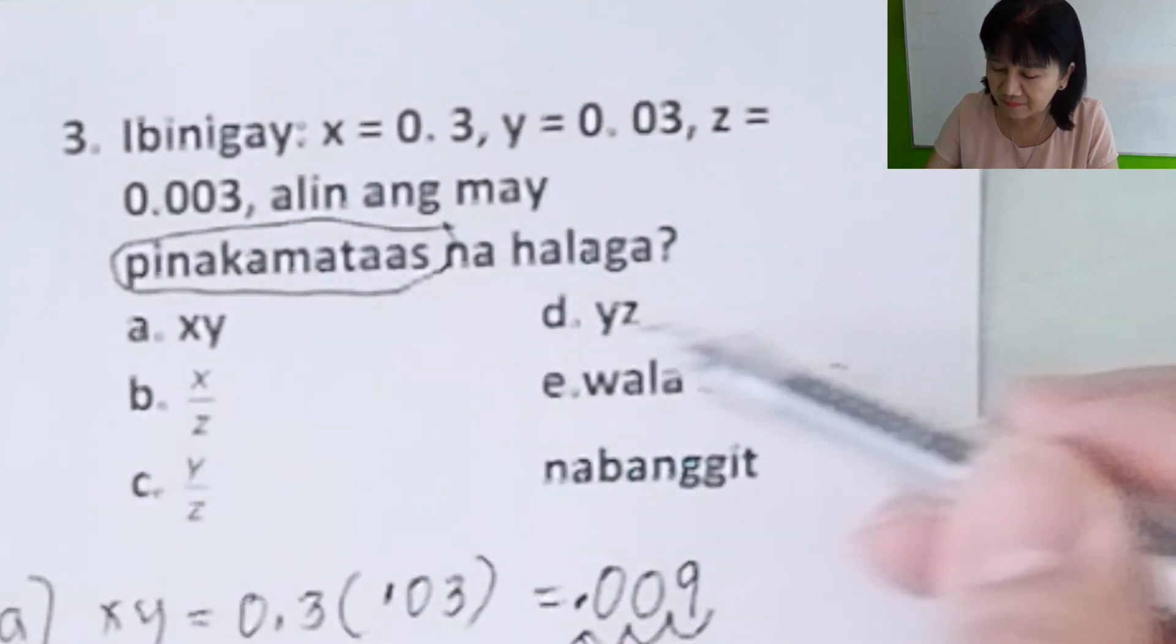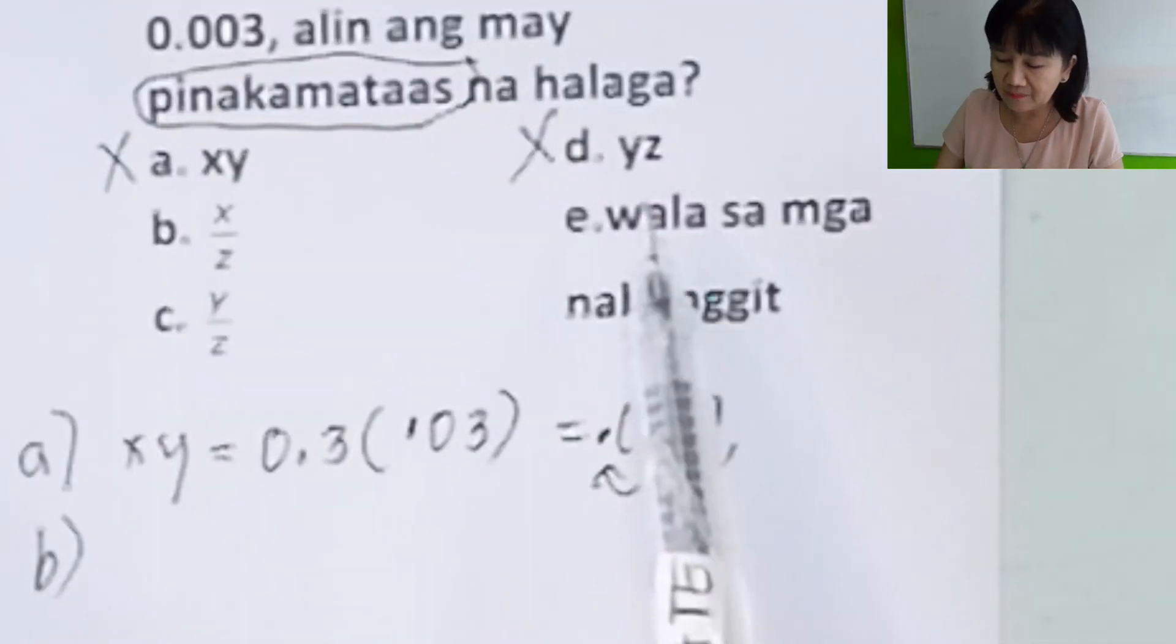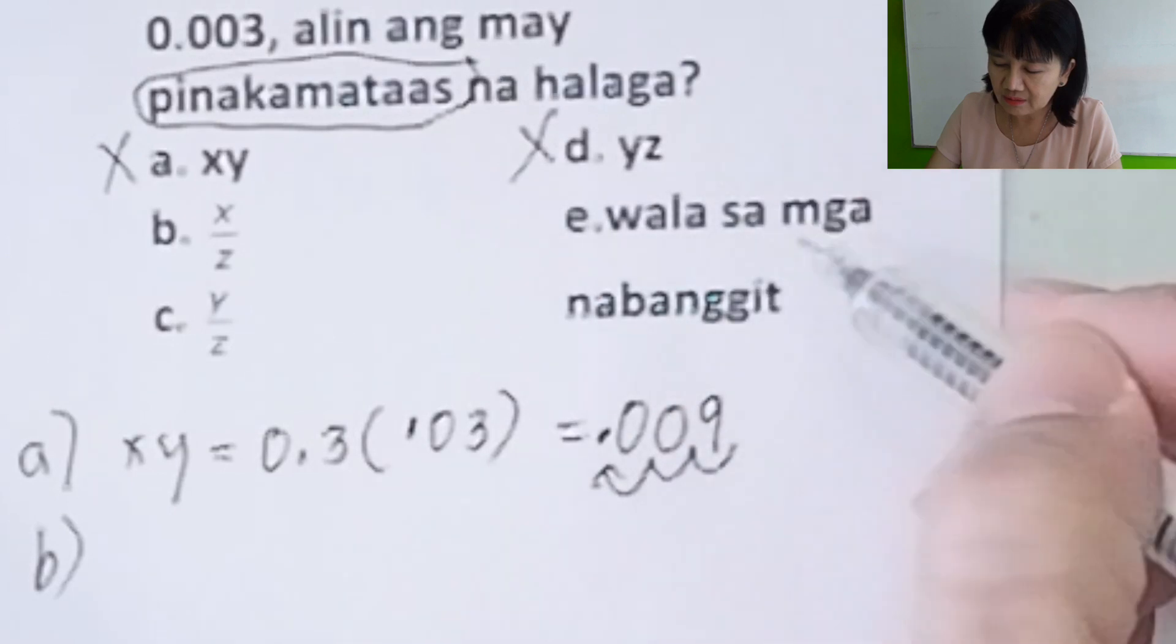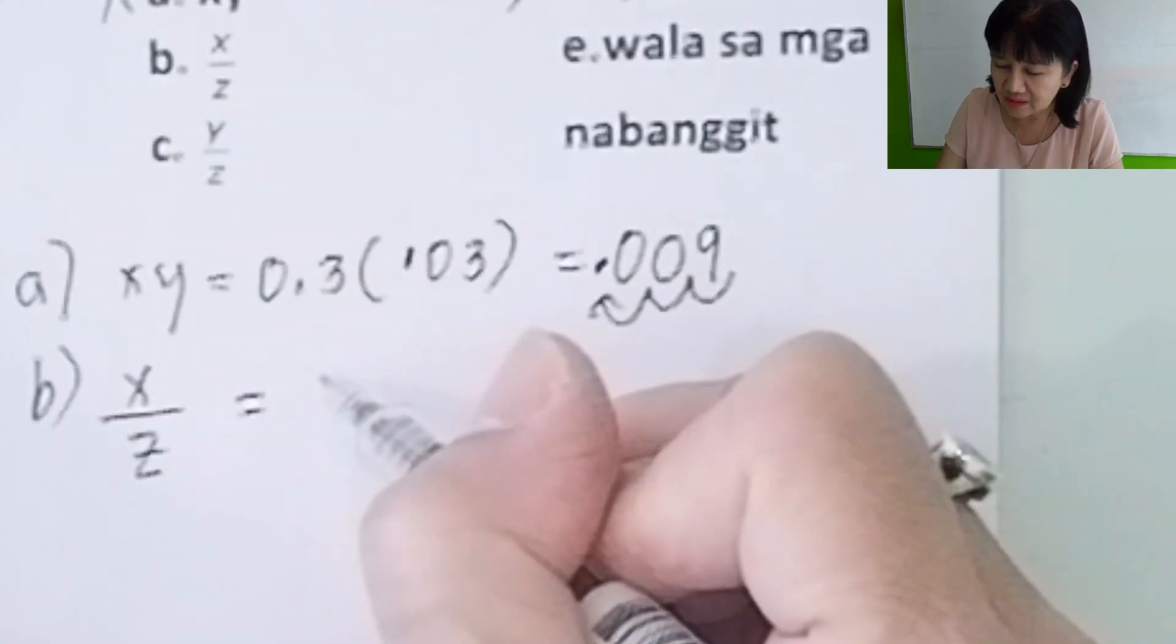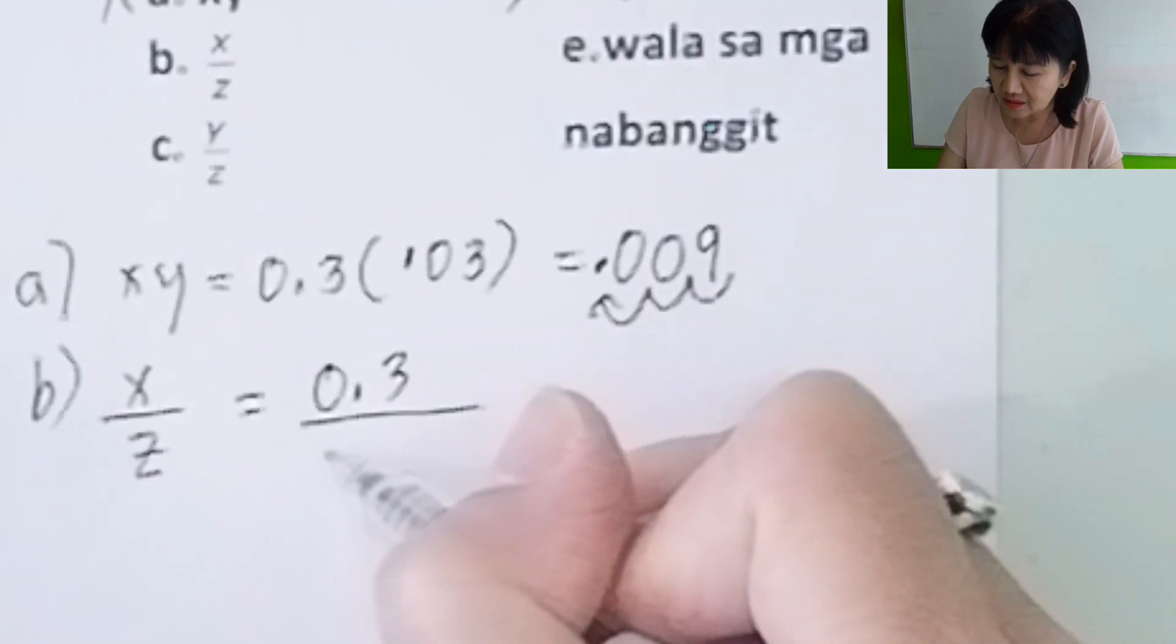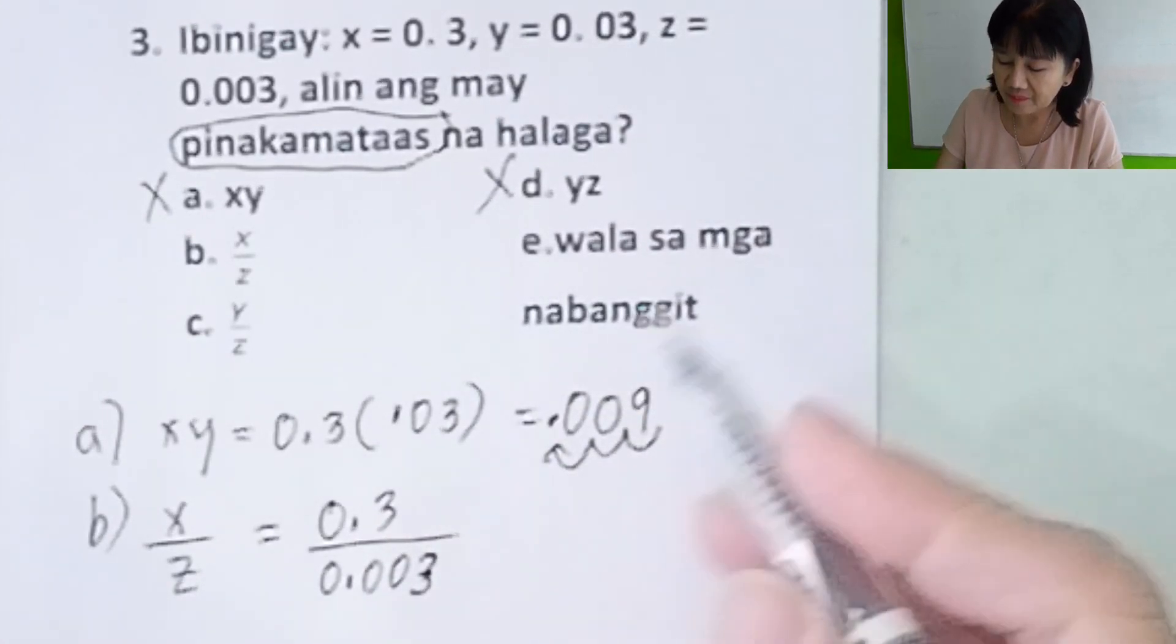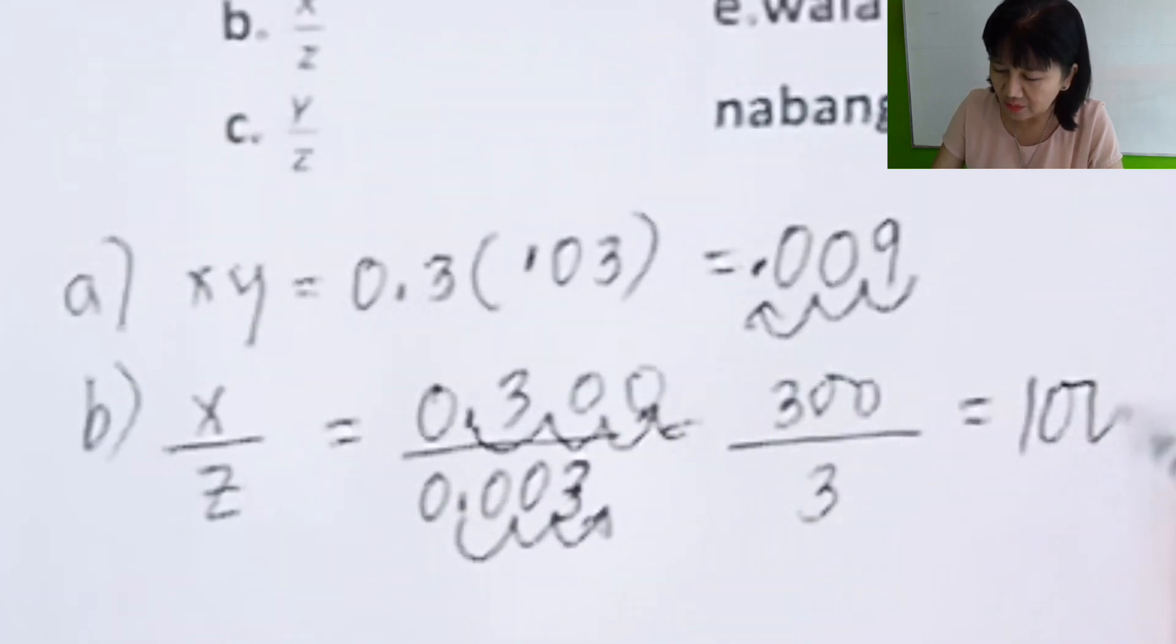What we need here: Alin ang may pinakamataas na halaga? Which has the largest value? This multiplication, A and D will already be out because when you're multiplying decimals you are counting the decimal places, making the value small. We will not try D anymore. Let us now try B and C. B is x over z: x is 0.3 over z is 0.003. How do you do that? One, two, three. This becomes 3. 0.003, move the decimal point three places. You also do it here, one, two, three. This becomes 300 over 3 is 100.